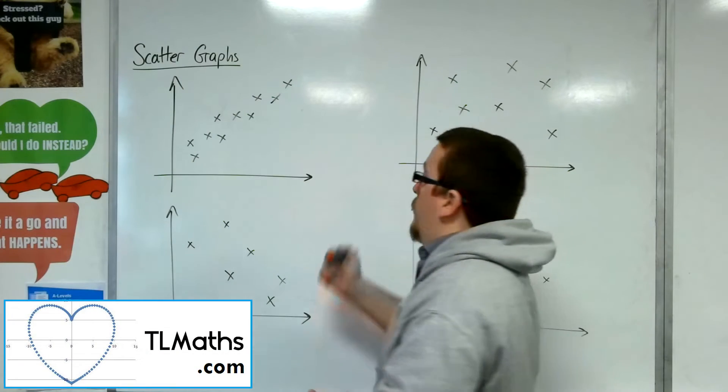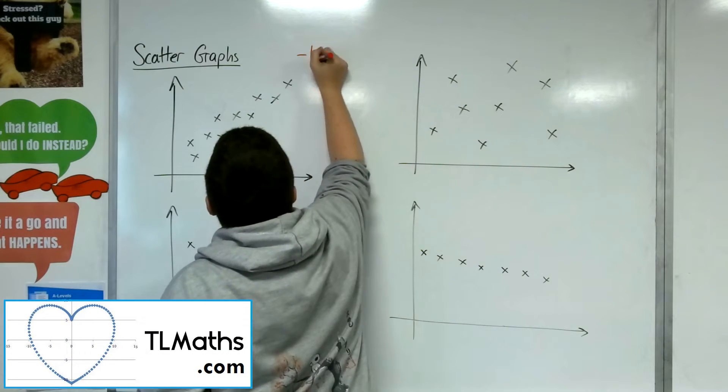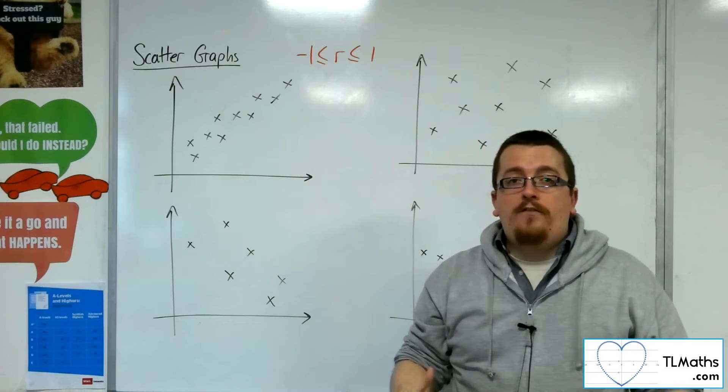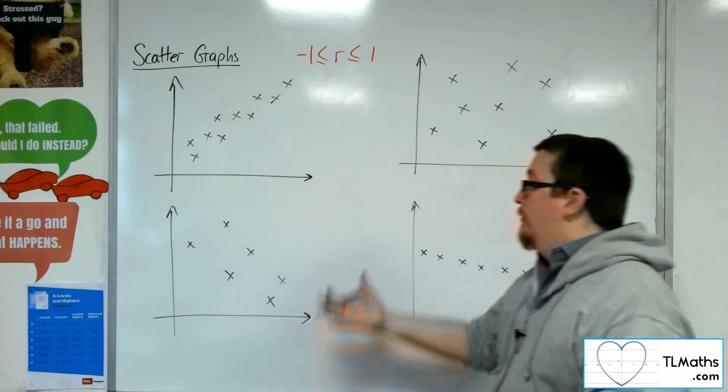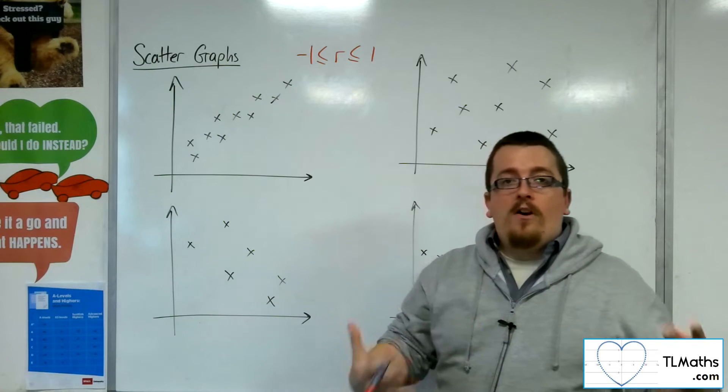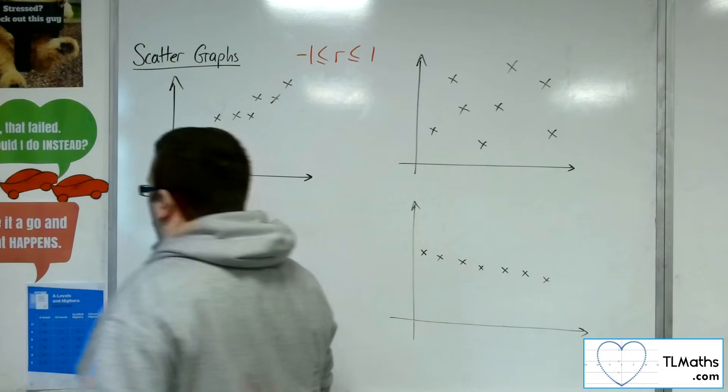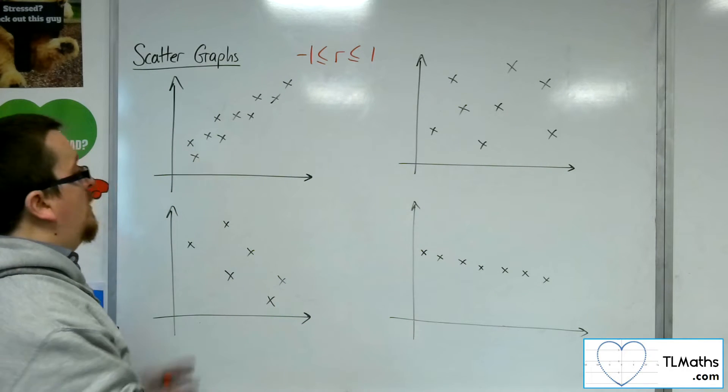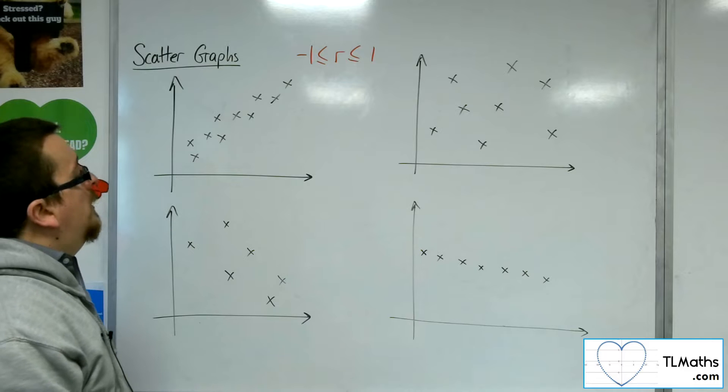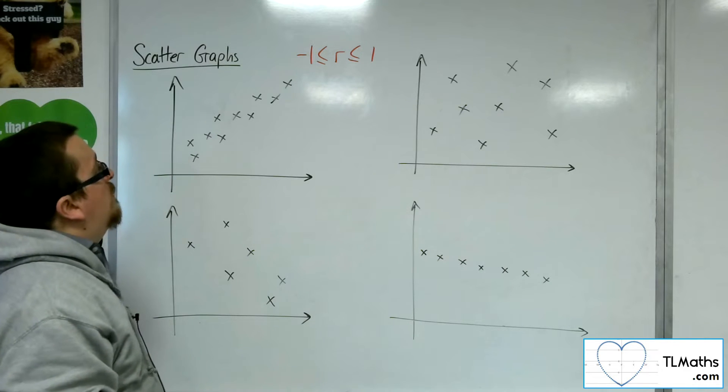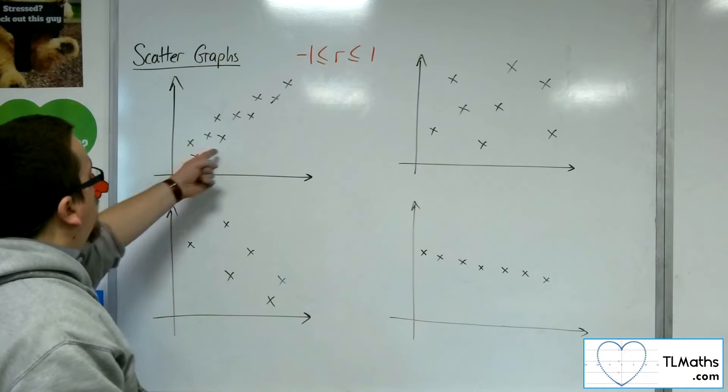Remember, the product moment correlation coefficient goes between minus 1 and 1. If you're presented with four scatter graphs like we've got here, it would be good if you're able to guess a value of r that would go with each of these graphs, so that you really understand what the product moment correlation coefficient is identifying.